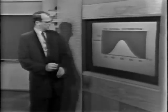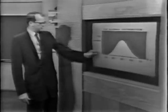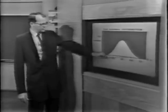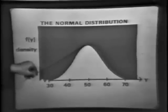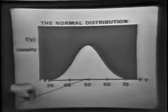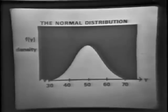It behooves us to think in terms of a normal distribution function with a few numbers locked into it, so let's look at another normal density function. Here we see one on the board. Here's F of Y, the frequency or density function, and along the horizontal axis the Ys are plotted. You'll notice here at 50, this is where the ordinate of the curve is greatest, and so that would be called the mode of the distribution.